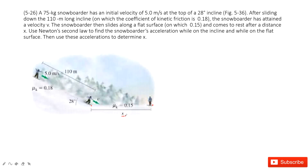So first, we know the initial velocity and the final velocity is 0. We want to find x, so we need to know the acceleration and the velocity at the turning point. We call the velocity at the turning point v1. So we have v0, v1, and v2.